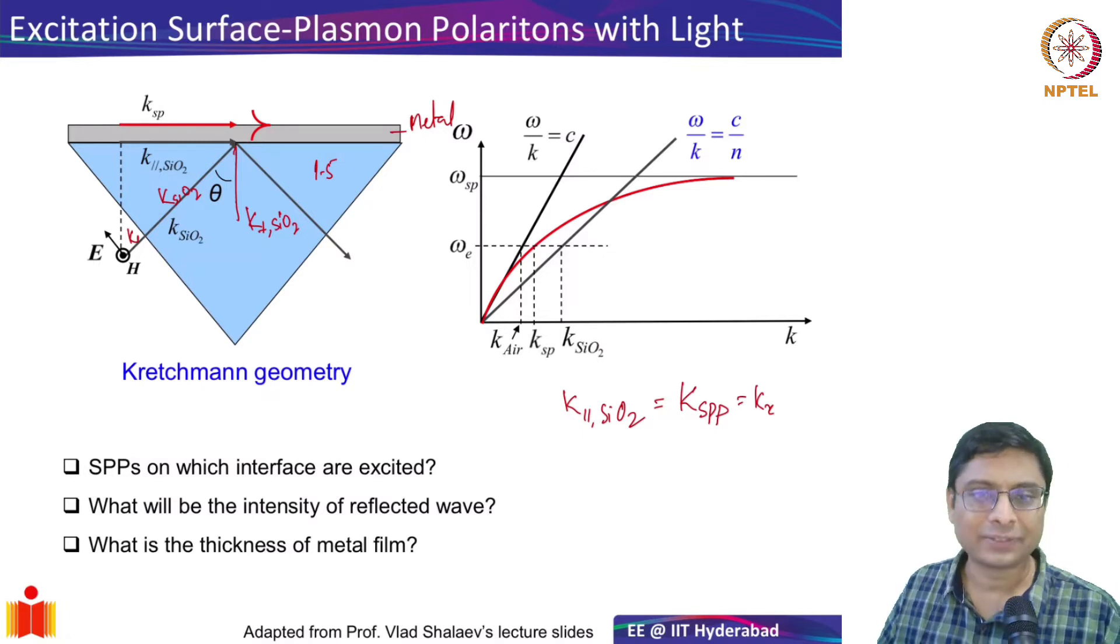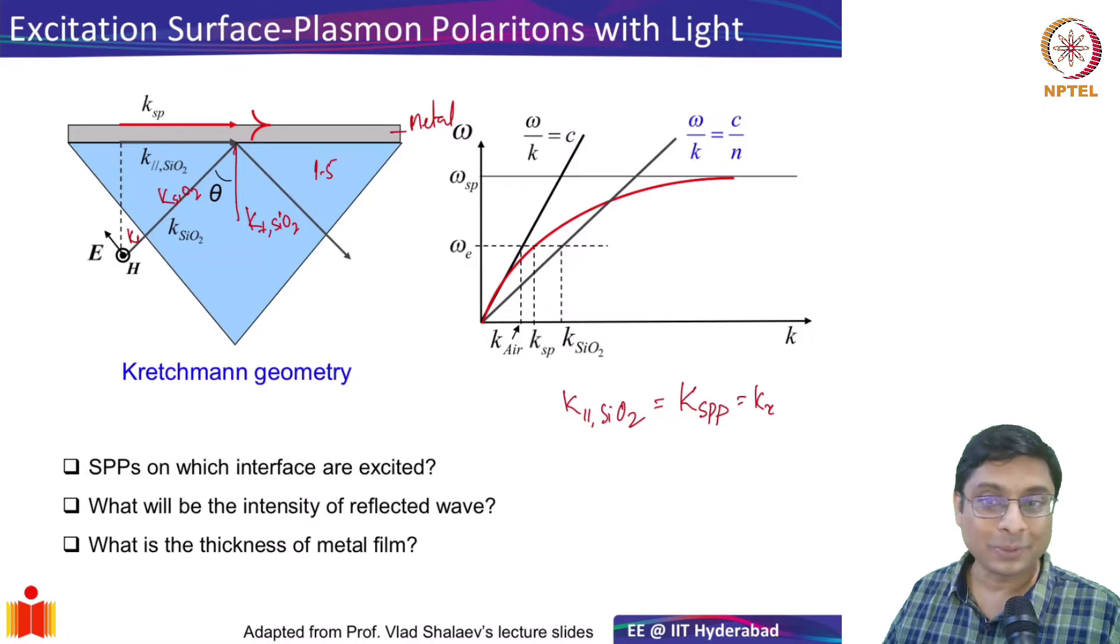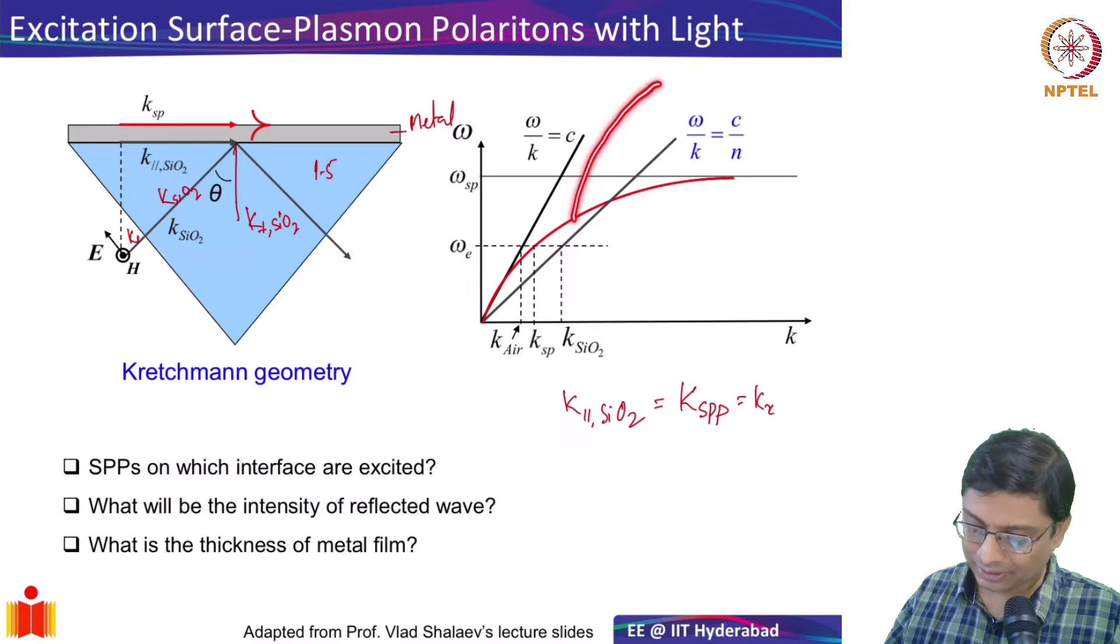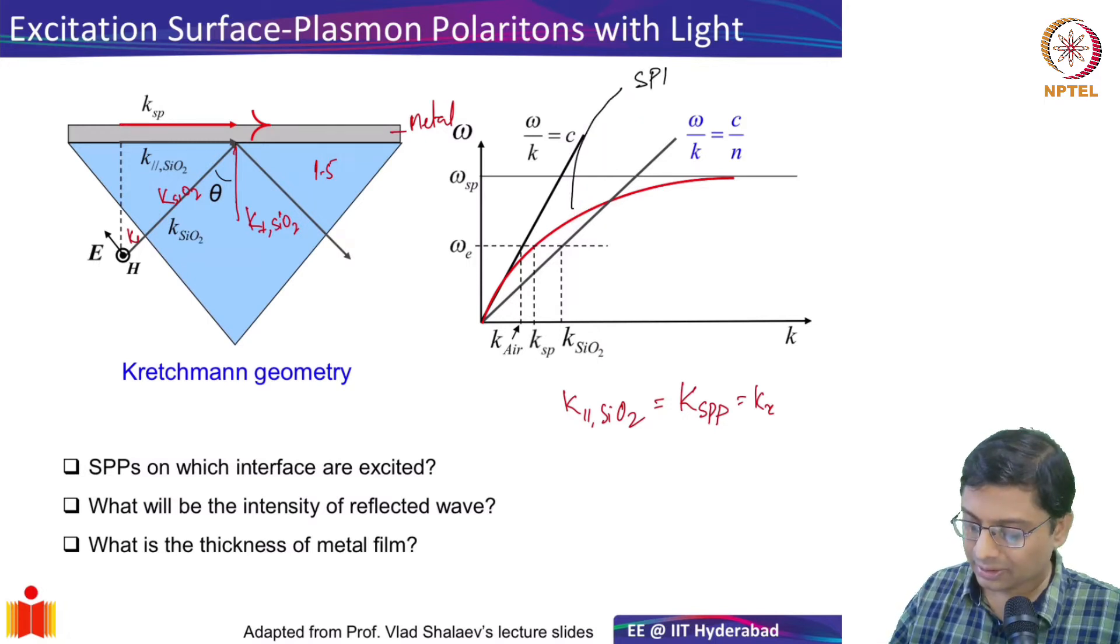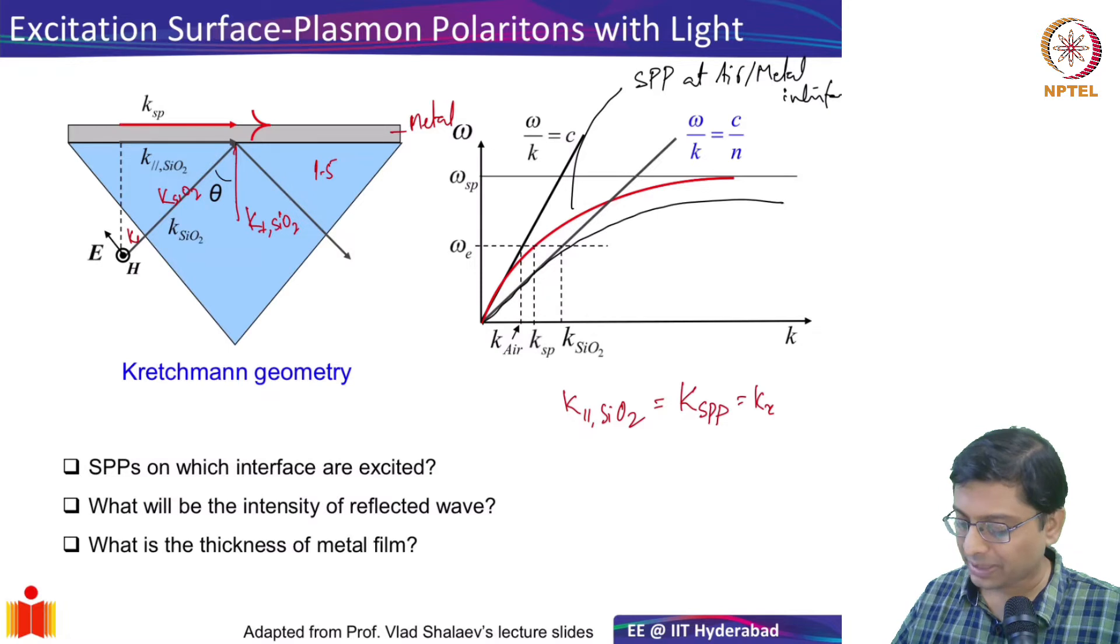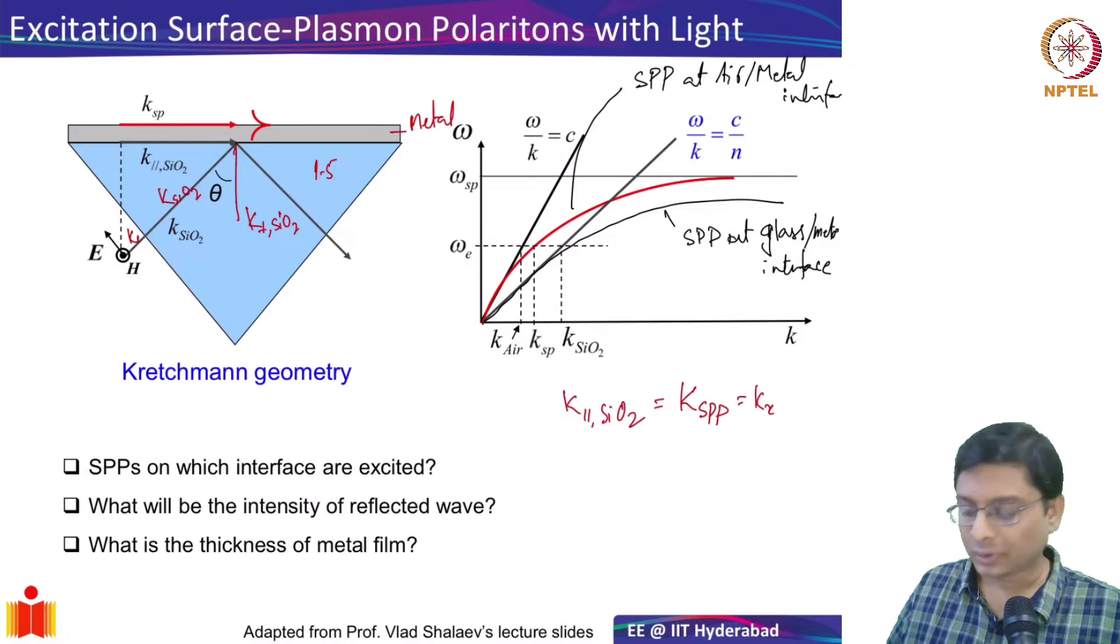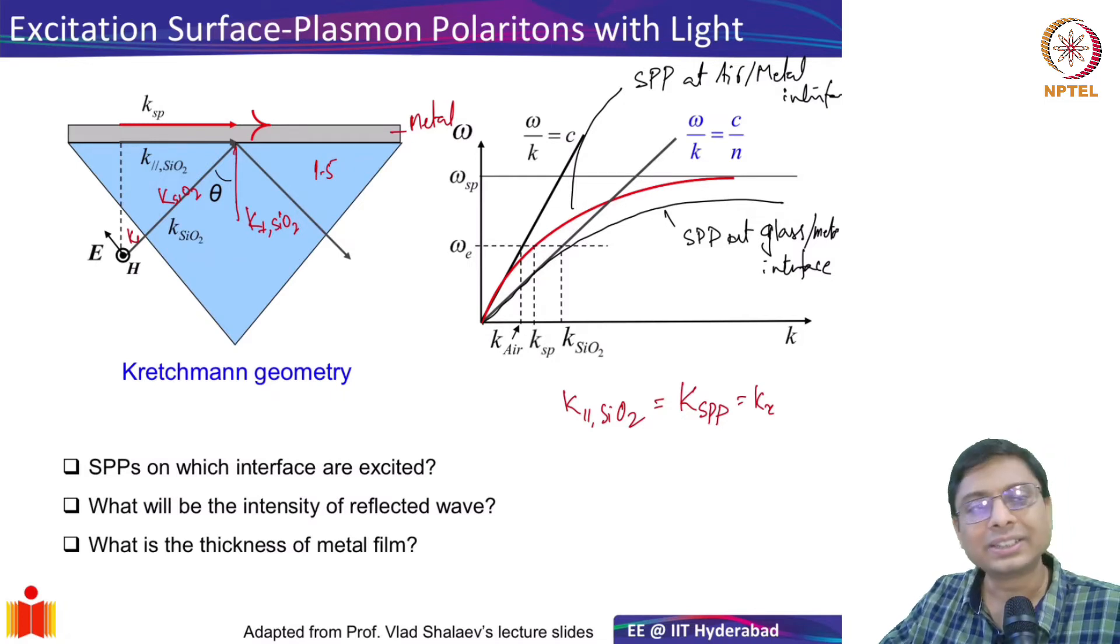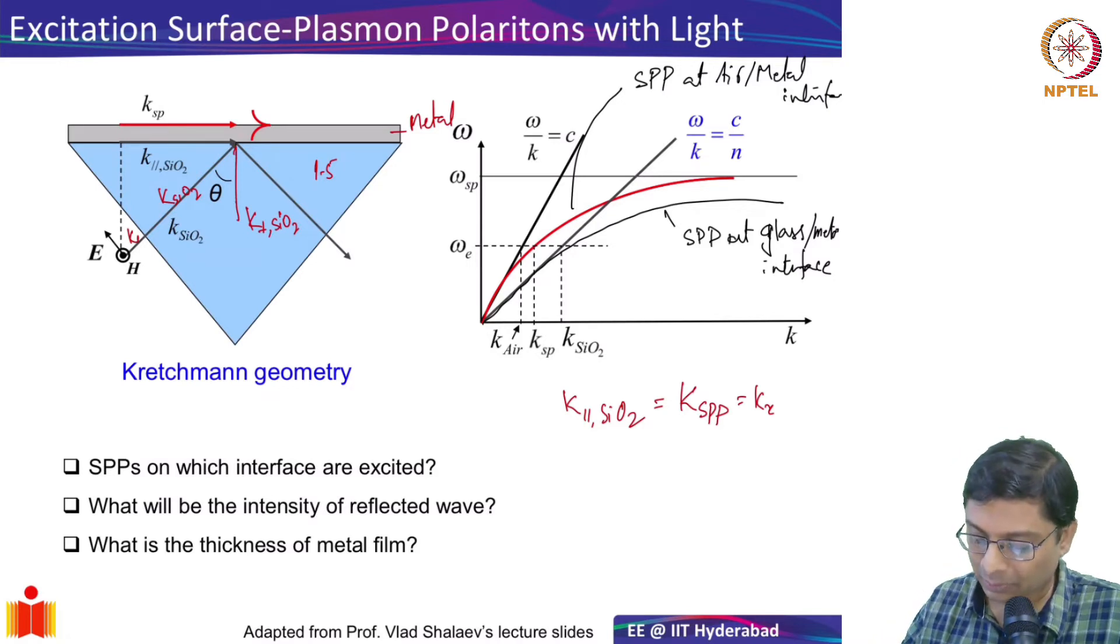When I reach that I can excite a surface plasmon polariton. Wait a minute, how? The reason is there are two surface plasmon polaritons that are possible. One is the SPP at the air-metal interface. I can have another SPP at the glass-metal interface. When I come through the prism, the momentum of SPP at the glass-prism interface is always going to be larger than the momentum of light in the glass. So you cannot excite a plasmon polariton at this interface.